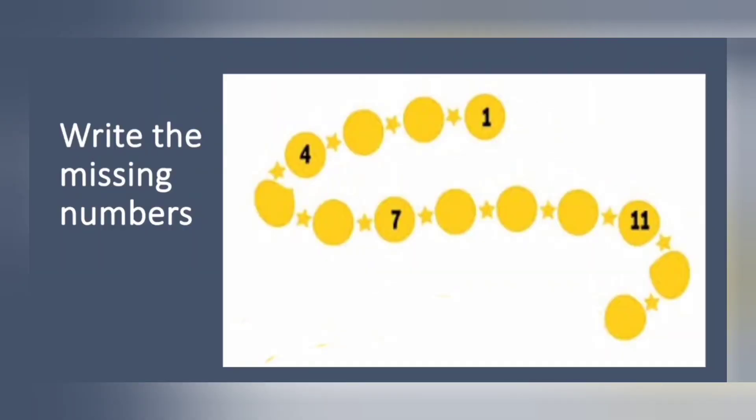Now we will write the missing numbers. Still, how many numbers we learnt? Thirteen, right? Okay. We will write the missing numbers. One. One after two. Write the number two. Two. After two, three. Four, it's already there. Five. Six. Next. Seven. Already there. After seven, eight. Eight. Nine. Ten. One, zero, ten. One, one, eleven is there. One, two, twelve. And one, three, thirteen. Got it right? Remembered all the numbers. Very good.